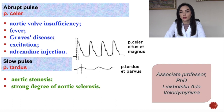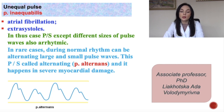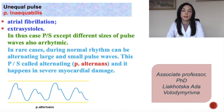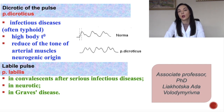You can see the sphygmogram variants of pulse on the picture at the right side. Slow pulse, pulsus tardus, can be felt during aortic stenosis and strong degree of aortic sclerosis. Unequal pulse, pulsus inaequabilis, can be felt during atrial fibrillation and extrasystoles. In rare cases during normal rhythm, alternating large and small pulse waves occur — this is called pulsus alternans and it happens in severe myocardial damage. Dicrotic pulse, pulsus dicroticus, can be felt during some infectious diseases, often with high body temperature, reduced tone of arterial muscle, or neurogenic origin.